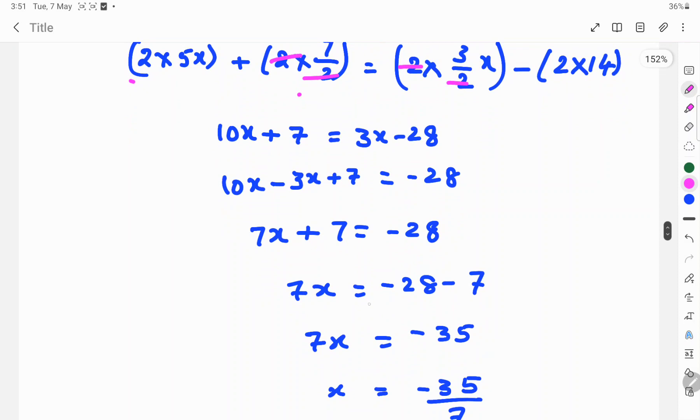7x equals minus 28. Here positive 7 change to left hand side, then minus 7. So, 7x equals minus 28 and minus 7 is minus 35.